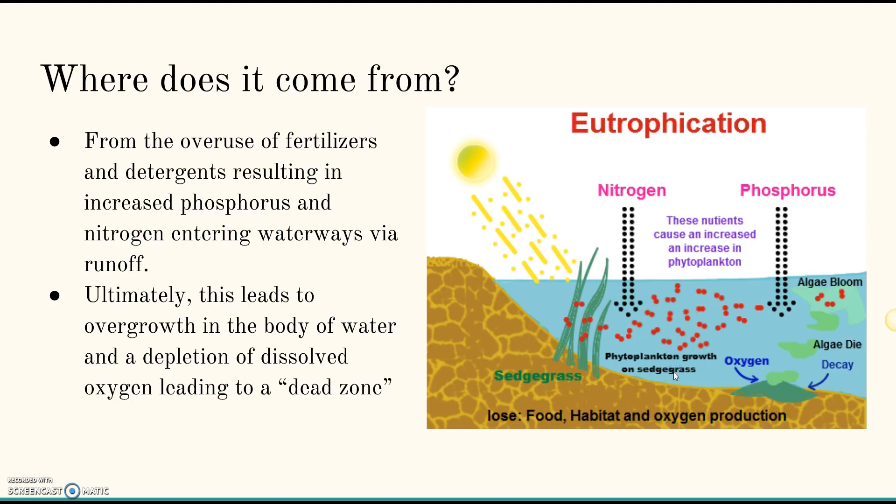It comes from the overuse of fertilizers and detergents. Inside these fertilizers and detergents we have excess phosphorus and nitrogen. Phosphorus and nitrogen are great nutrients that are used by plants in order to grow. The phosphorus and nitrogen gets onto our land and then starts to move into our waterways through runoff. Ultimately what occurs with all this additional nitrogen and phosphorus, it leads to those dead zones that we saw in the video that we watched right before Christmas break.